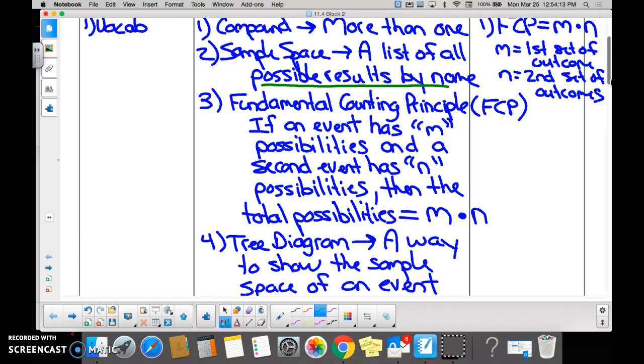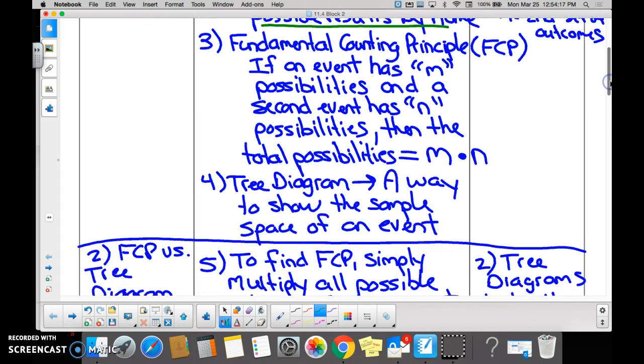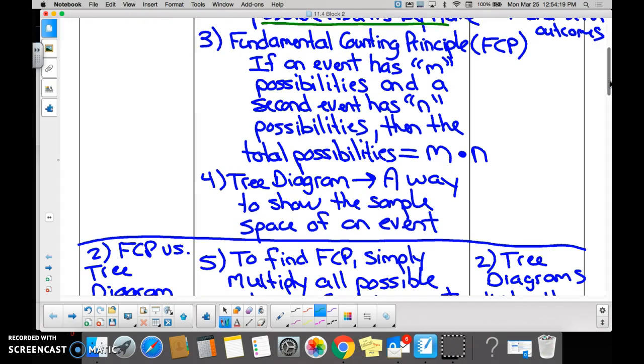The Fundamental Counting Principle is really important. It says that if you take the number of possibilities in a first event and multiply it by the number of possibilities in a second event, it gives you the total number of possibilities.